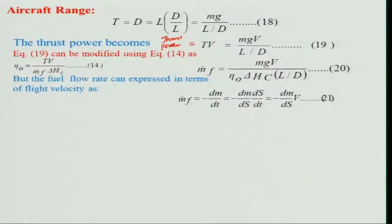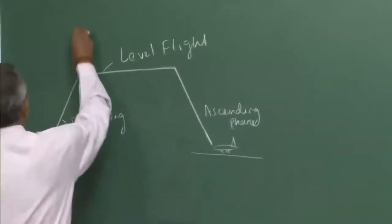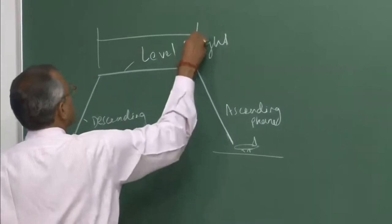So I can write ṁ_f = −dm/dt, where m is the mass of the vehicle (including passengers, fuel, crew, and the aircraft itself). While in level flight, only the fuel mass changes. I can also write dm/dt = (dm/ds) · (ds/dt), where s is the range — the distance traveled.